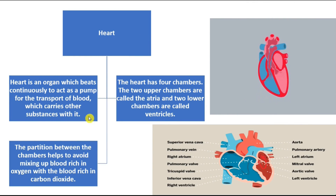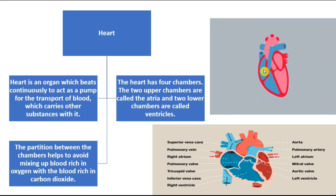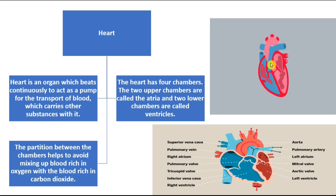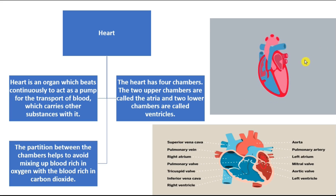The heart is an organ which beats continuously. It acts as a pump to transport blood to all parts of the body. The heart has four chambers: the two upper chambers are called the atria and the two lower chambers are called ventricles. The partition between these chambers helps to avoid mixing of oxygen-rich blood with carbon dioxide-rich blood.